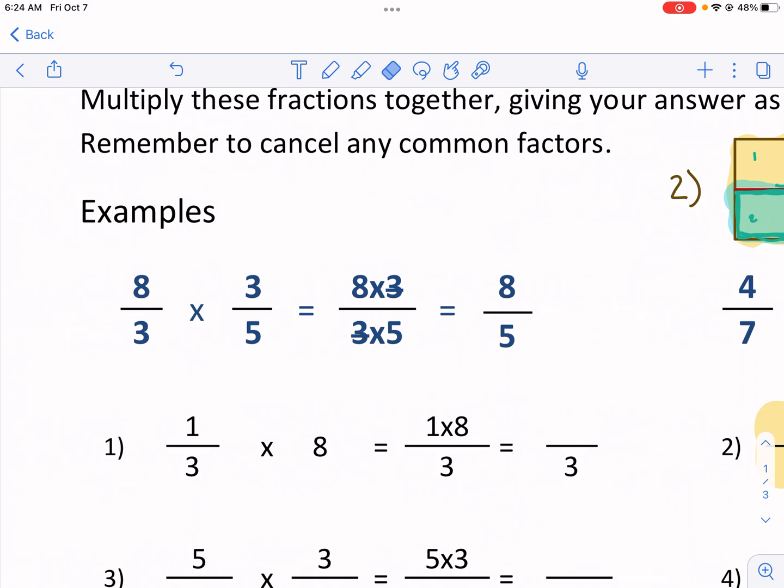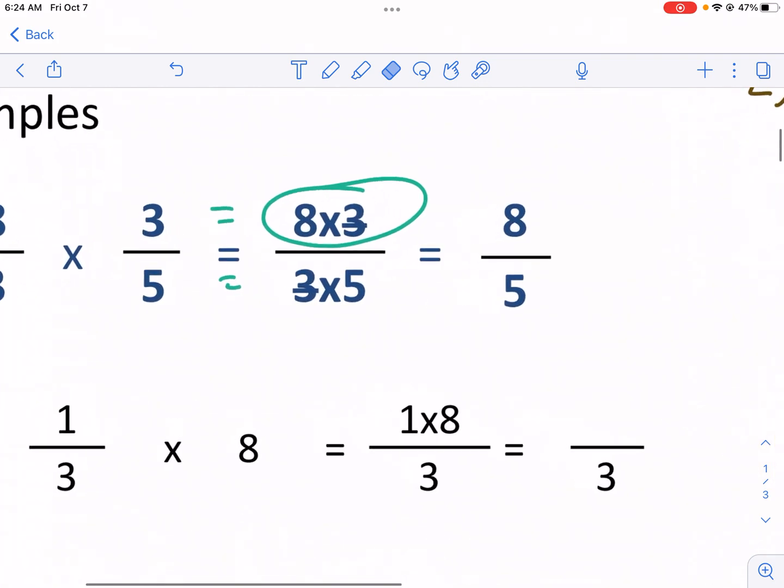What I like about Math Salamanders is it talks you through how to do that. So if we have eight thirds times three fifths, again, top times top, that's the rule. Bottom times bottom, you're going to multiply these two things just like that.